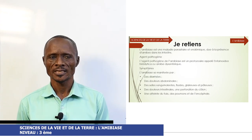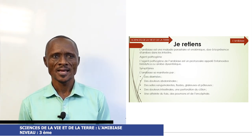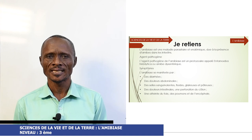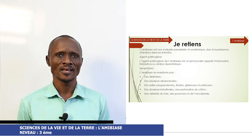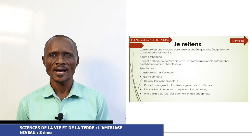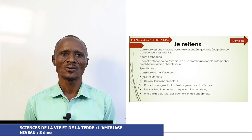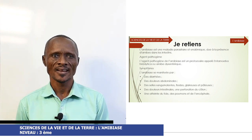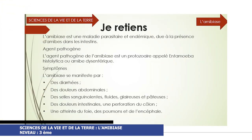Je retiens. L'amibiaz est une maladie parasitaire et endémique due à la présence d'amibes dans les intestins. Agent pathogène : l'agent pathogène de l'amibiaz est un protozoaire appelé Entamoeba histolytica, ou amibes dysenteriques.